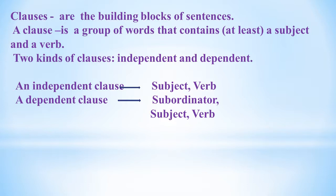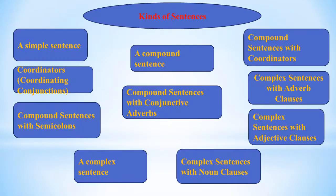Examples of subordinators include: after, before, that, when, which, although, even though, whenever, while, as, just as, how, unless, who, as if, until, wherever, whom, because, so that, etc. A sentence is a group of words that you use to express your ideas. Every sentence is formed from one or more clauses and expresses a complete thought.